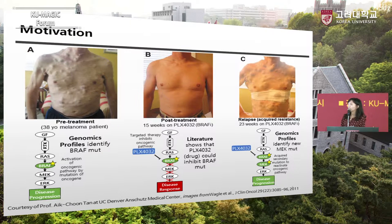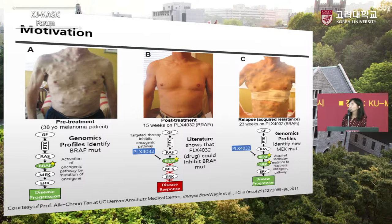흑색종이라는 피부암에 걸린 38살 환자가 있는데, 이 환자는 BRAF라는 유전자의 뮤테이션이 있었습니다. 그래서 이 BRAF 뮤테이션을 직접적으로 타겟하는 PLX4032라는 약물을 투여했더니 놀랍게도 상당히 호전되는 결과가 나왔습니다.